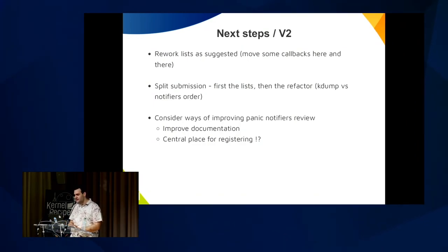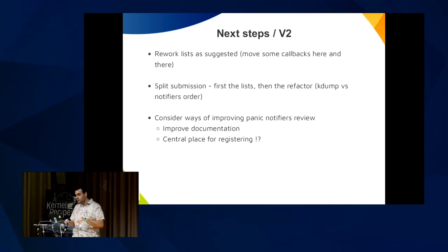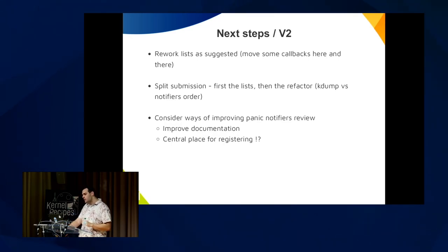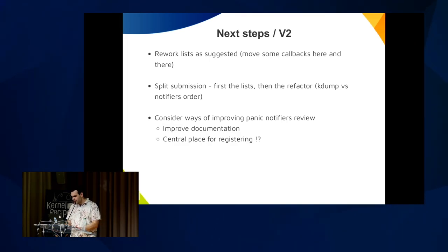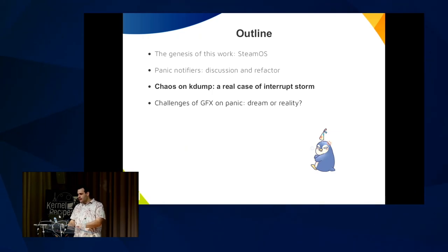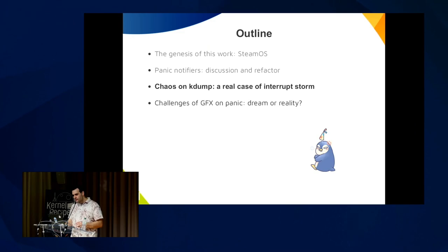The consensus is that notifiers are unreliable. Next steps for v2: change things after the discussion, rework the lists as suggested — moving some callbacks around — and split the submission: first the list fixes, then the refactor part of the kdump ordering. Also consider ways of improving panic notifiers review, possibly using Thomas's CPU hotplug ideas to change the whole approach.